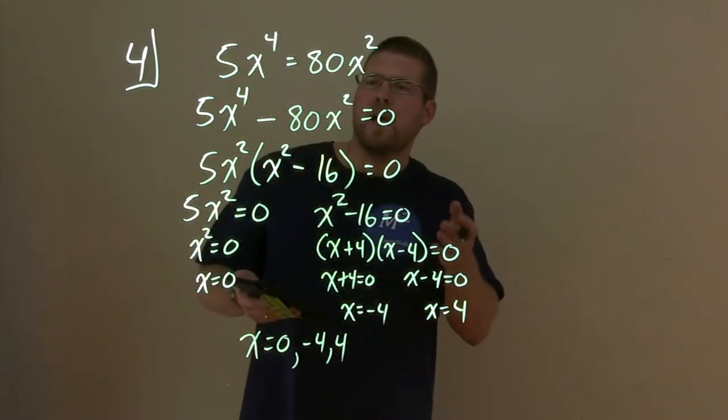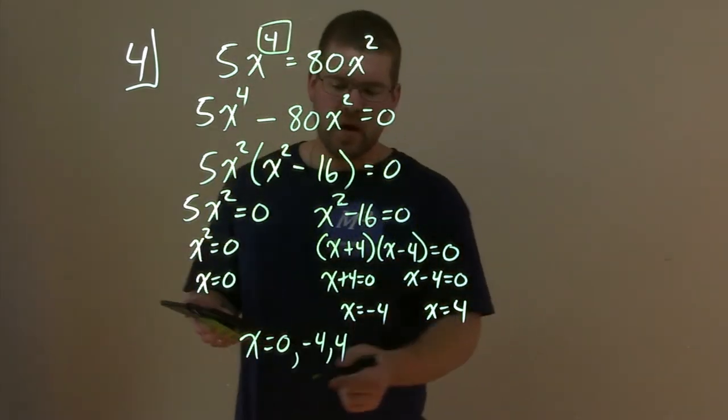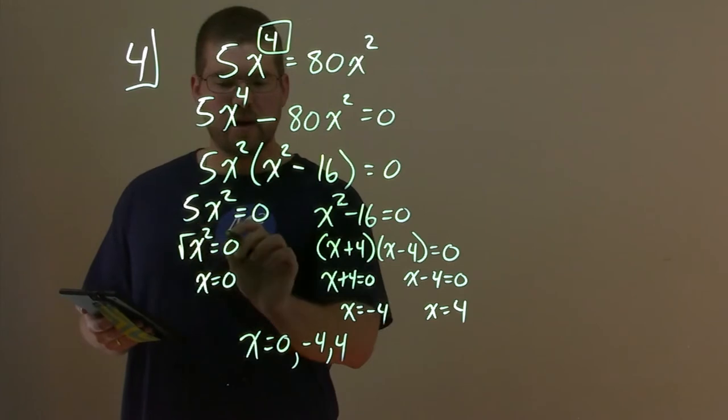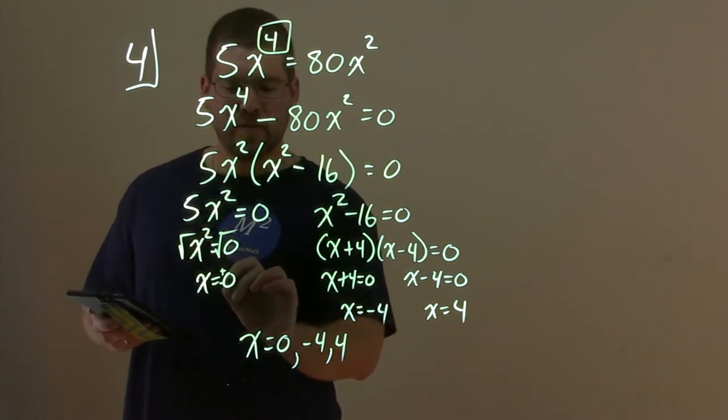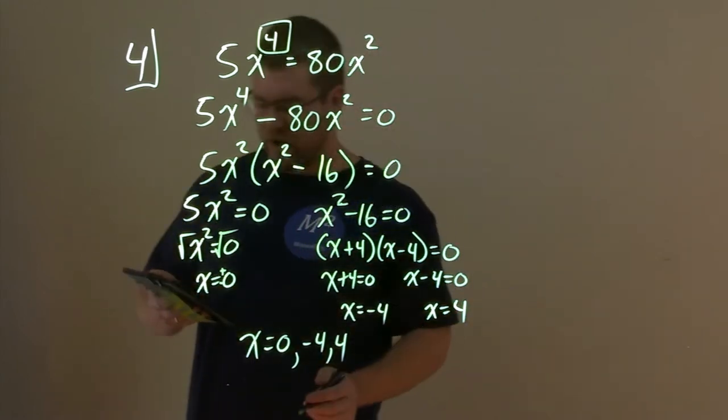And I know what you're thinking. You're like, hey, we get to the fourth power right here, right? Shouldn't we have four solutions? Well, 0 is what we call a double solution, right? Because if we take a square root of that, it's like a plus or minus 0, which is just two 0s, but you only need to write it once.